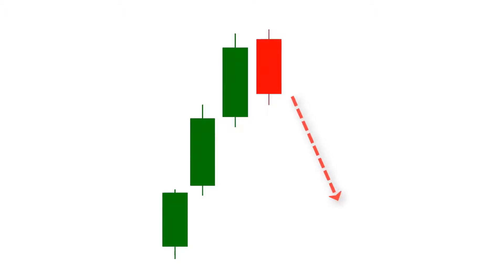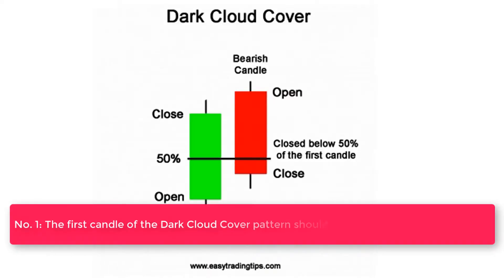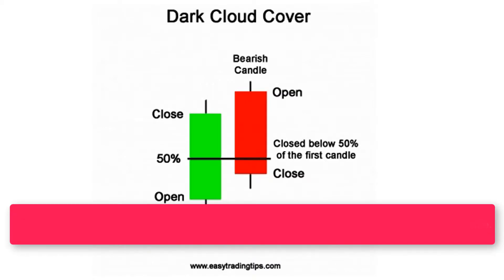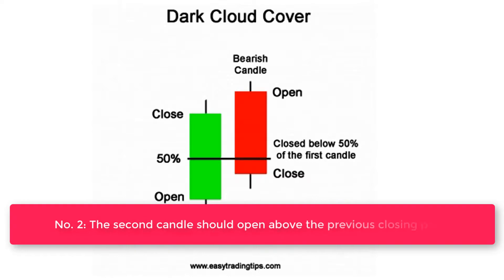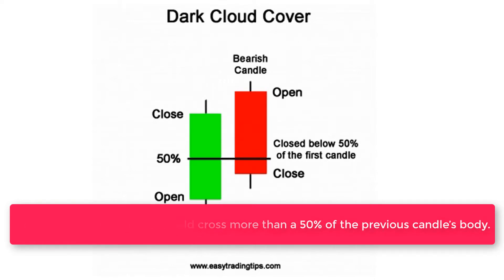When a dark cloud cover pattern appears at the top of an uptrend, most traders sell securities and profit from the trade — but only when the pattern is hundred percent perfect. Here are the conditions: number one, the first candle should be a strong bullish green candle. Number two, the second candle should open above the previous closing price. Number three, the second candle should cross more than 50 percent of the previous candle's body.